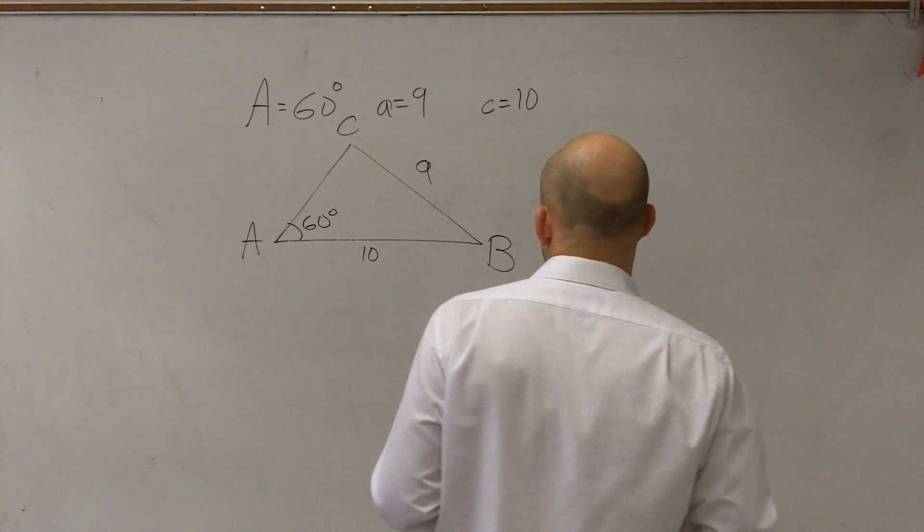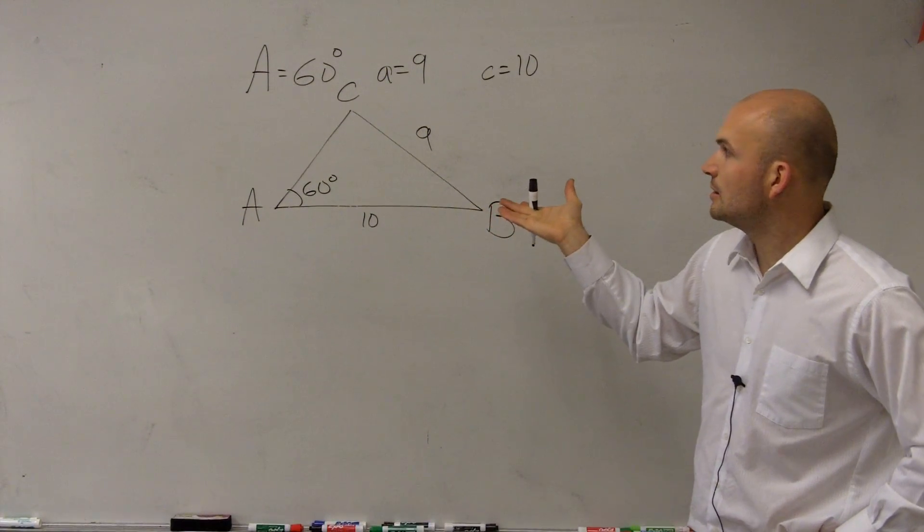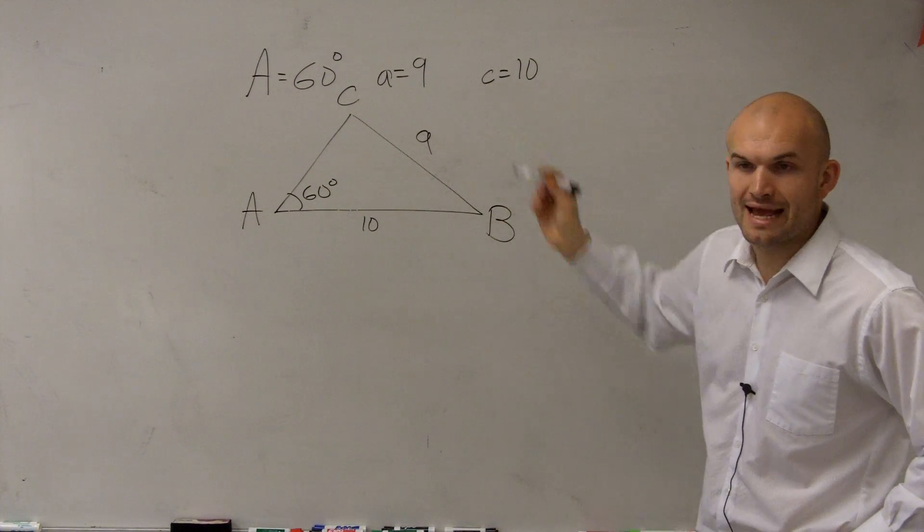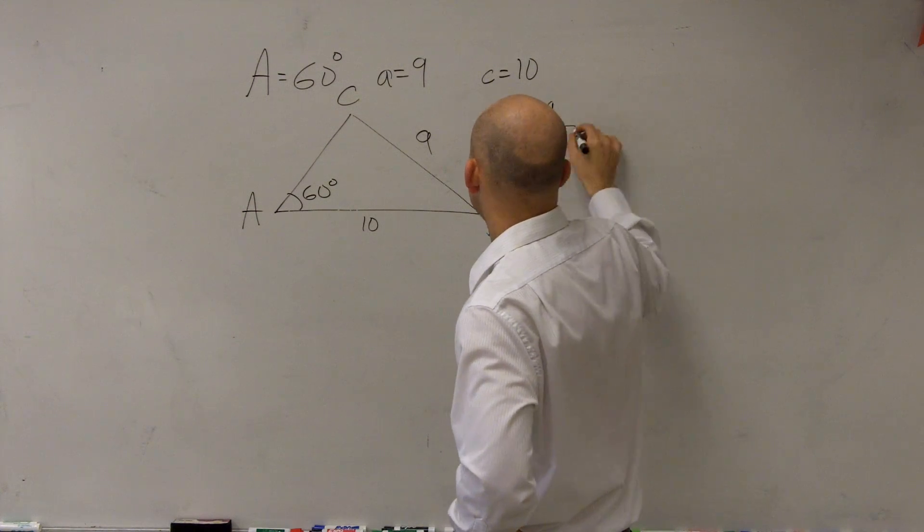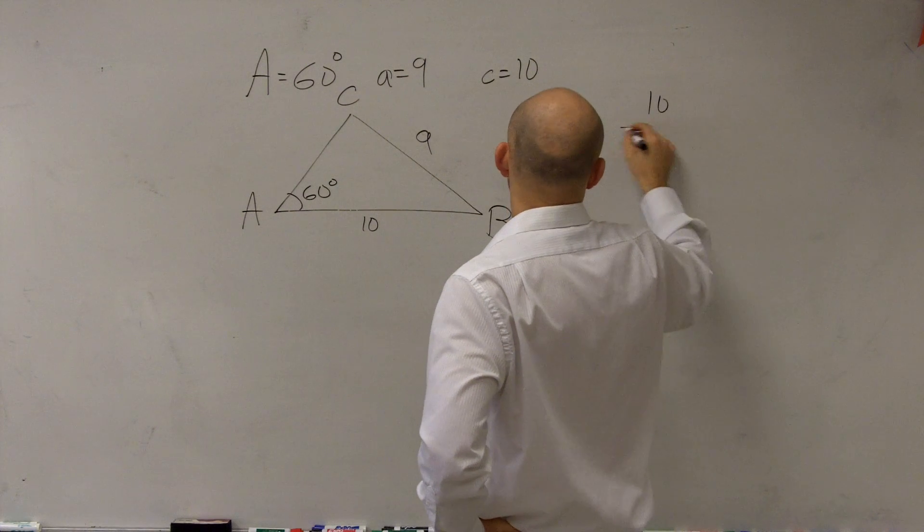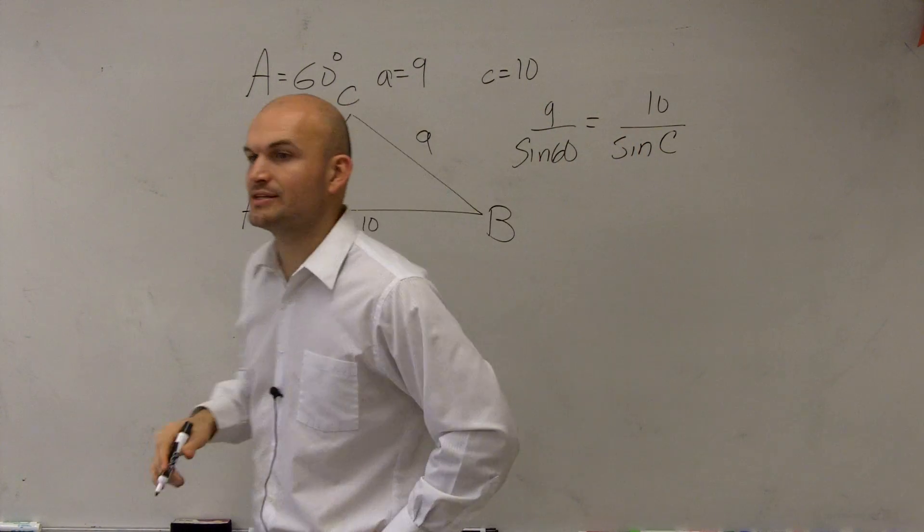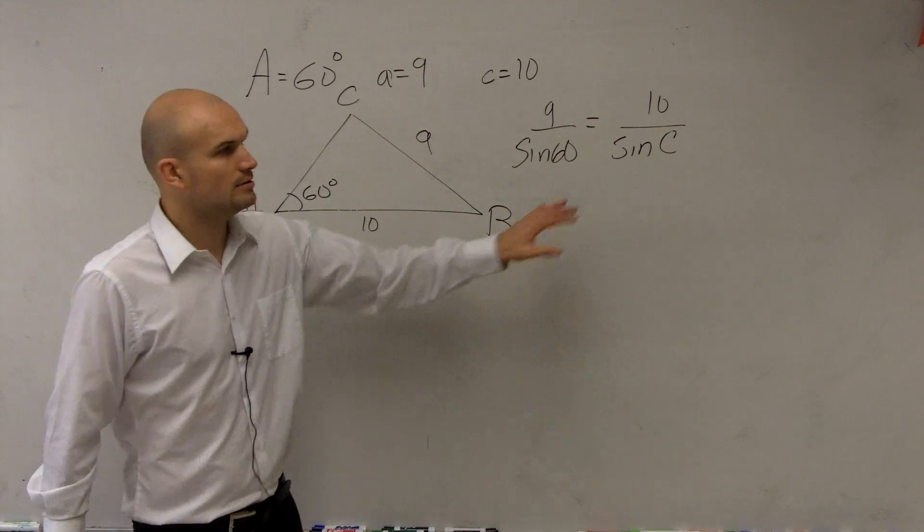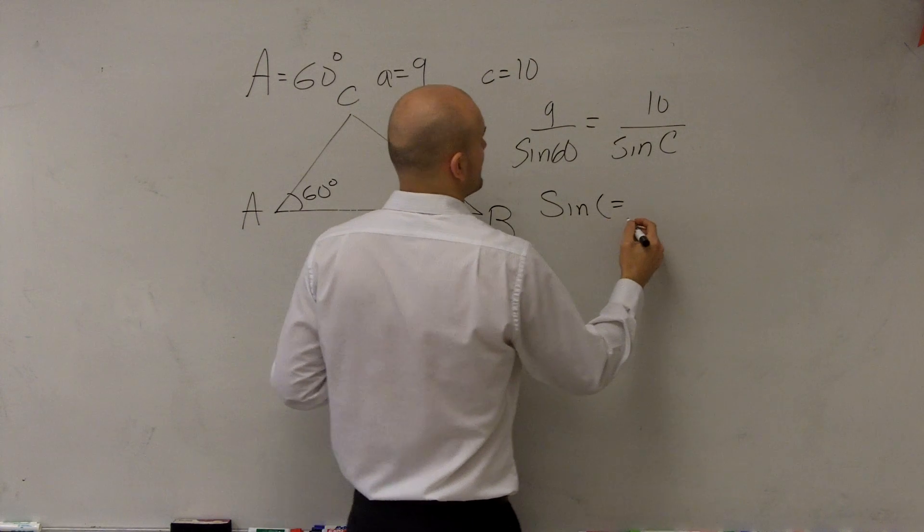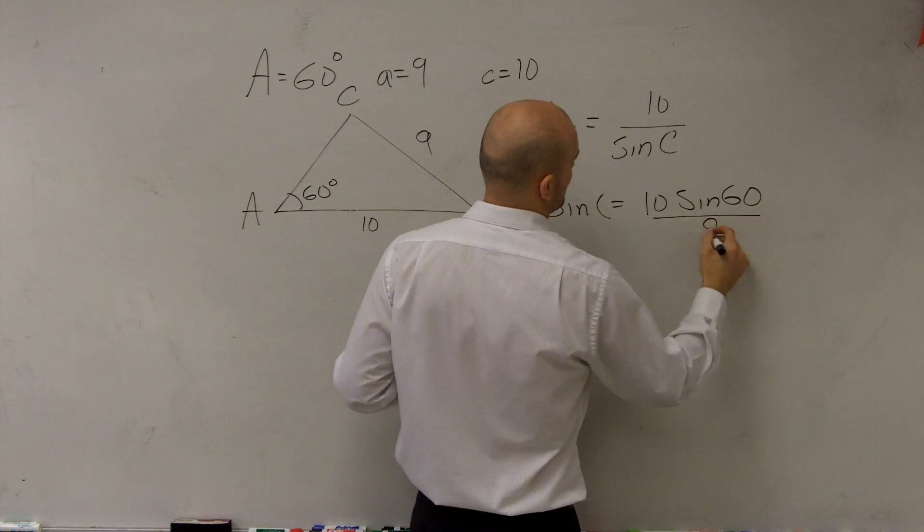Now, what we first want to do with this problem is obviously go ahead and take a look at what our, use our Law of Sines to be able to figure out what the angle of c is going to be. So I have 9 over the sine of 60 equals 10 over the sine of c. So everybody can get to this point, right? It's pretty basic. And then we can solve for the sine of c.